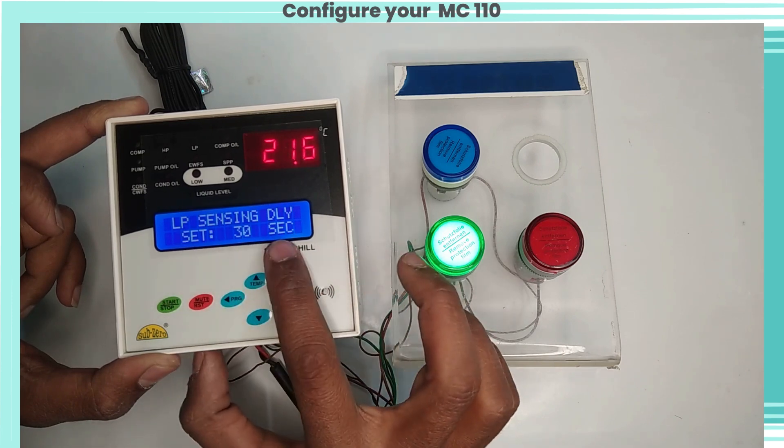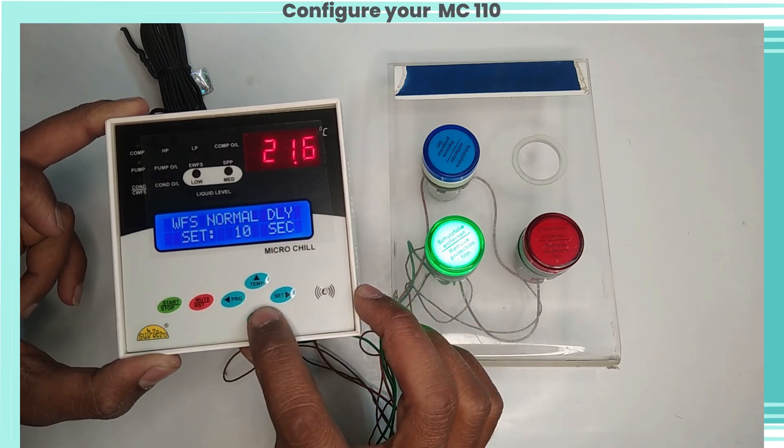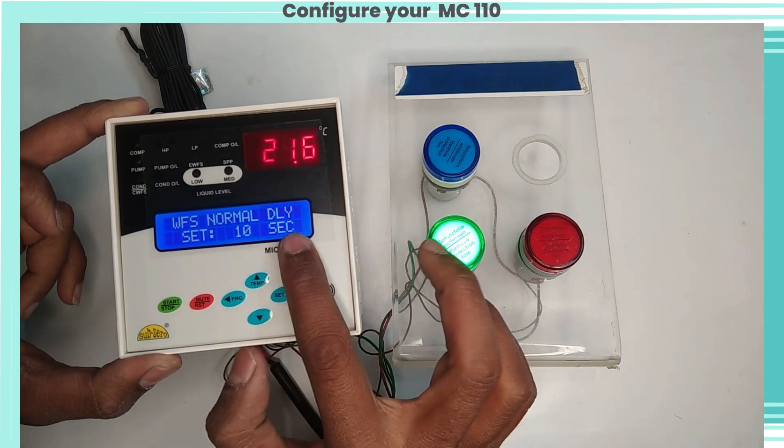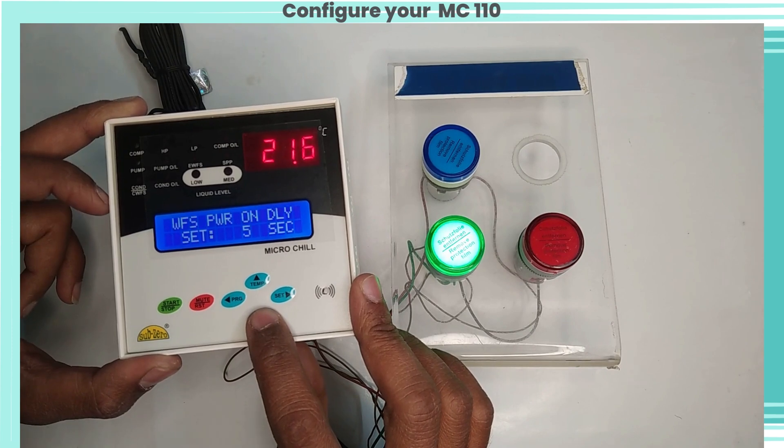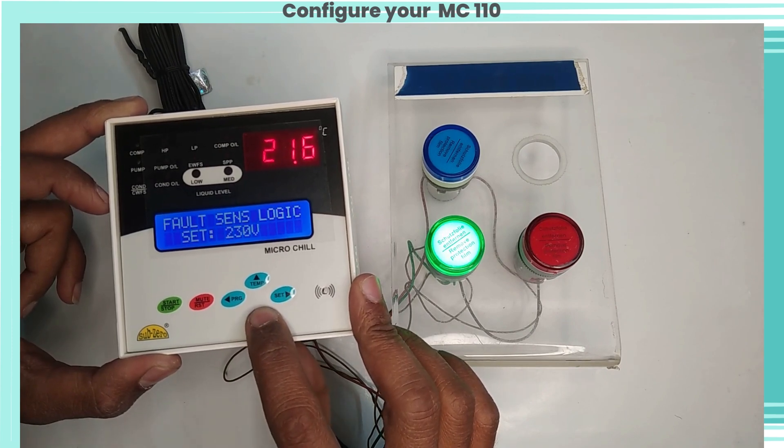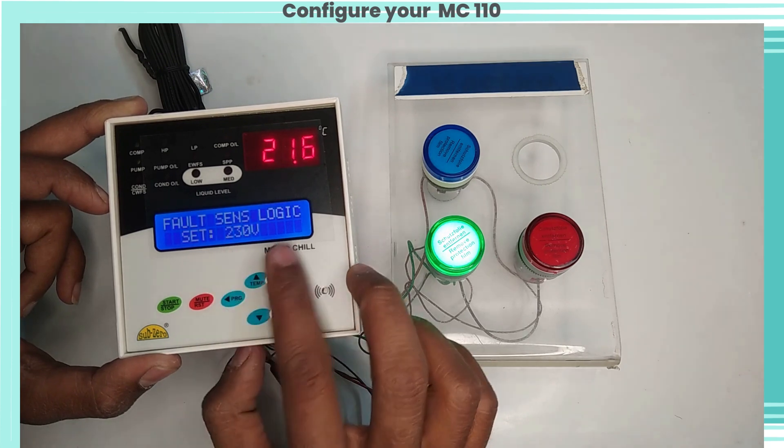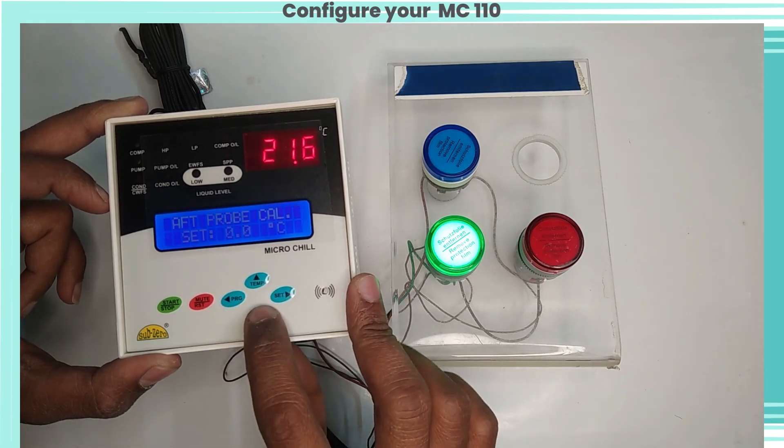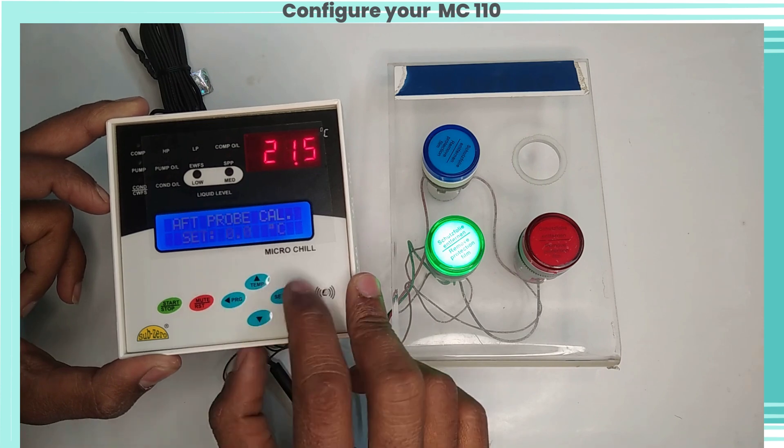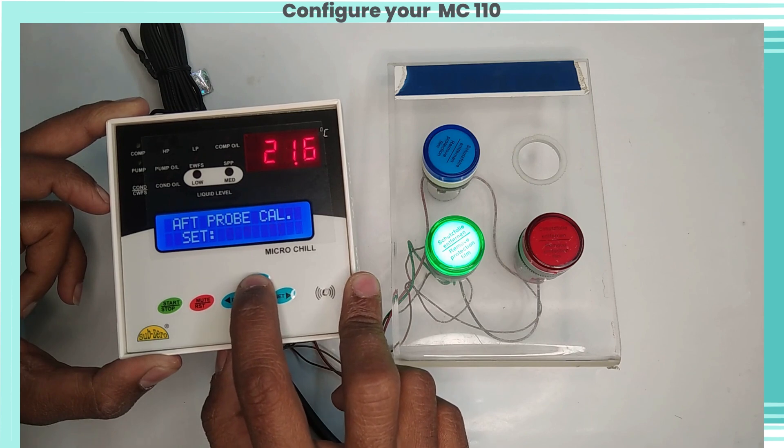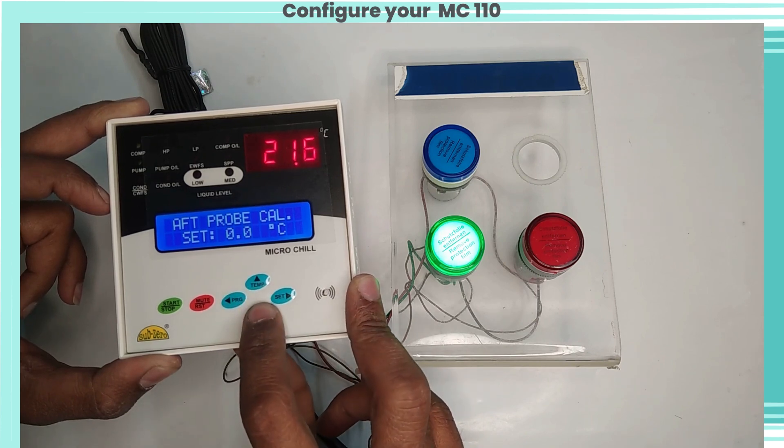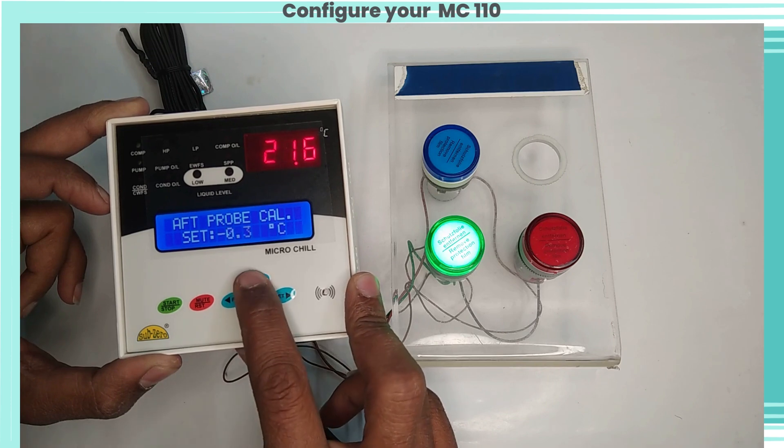ALP sensing delay: to set ALP fault sensing delay on compressor on. WFS normal delay: to set WFS trip sensing delay on power up. Fault sense logic: to set tripping voltage of digital inputs. AFT probe call: to set antifreeze probe calibration. Main probe call: to set main liquid probe calibration.